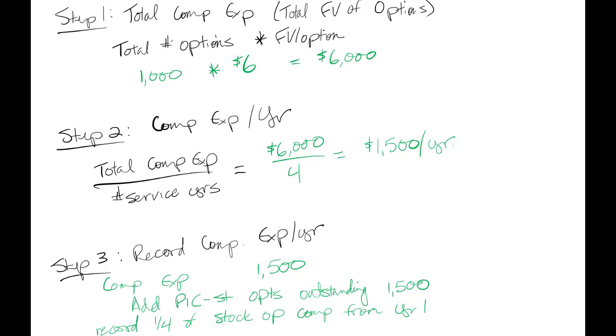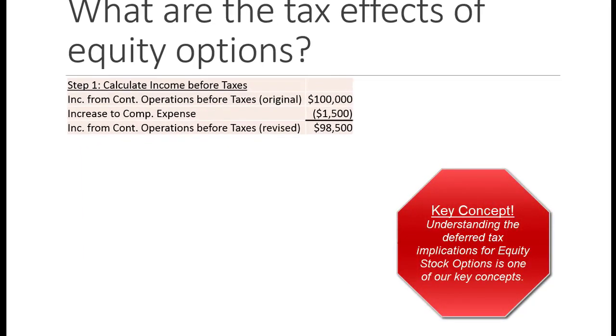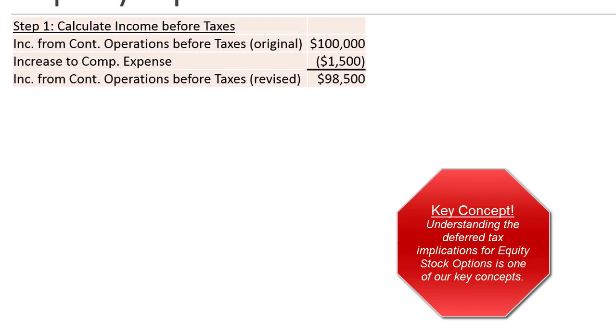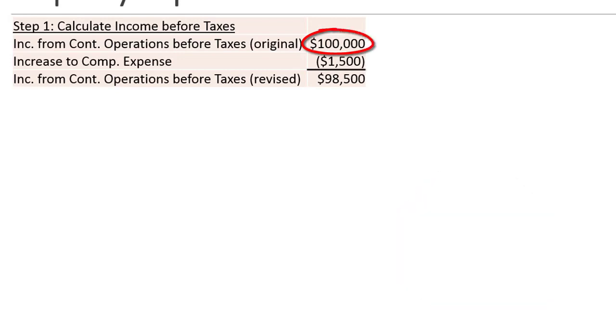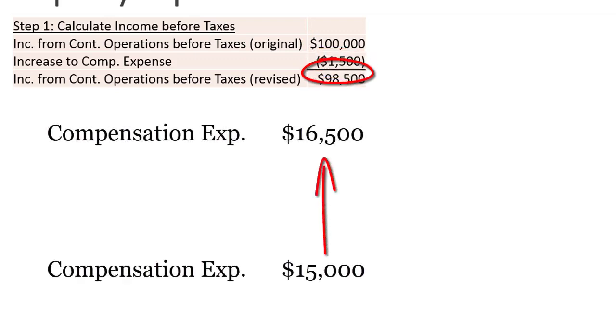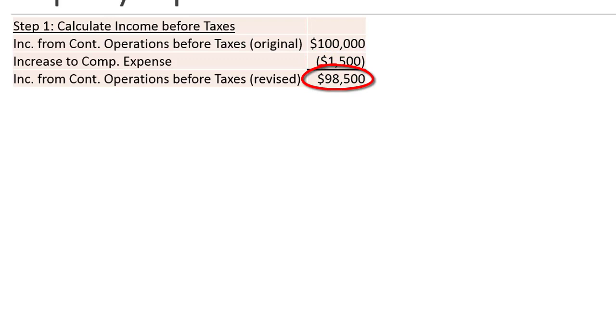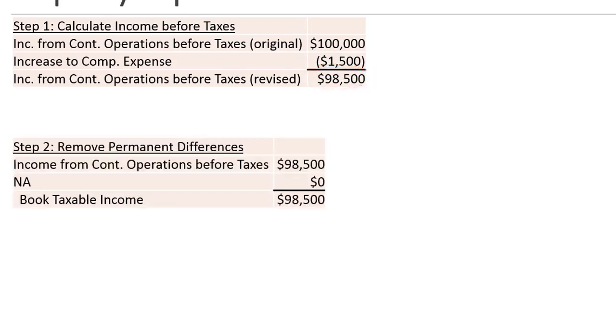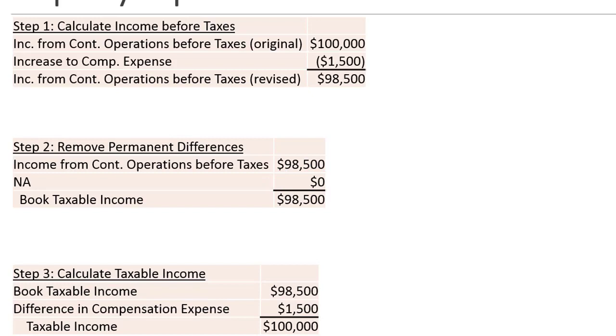So let's take a look at how this would fall out in our deferred tax calculations. First off, we'd start by calculating income before taxes. So before we granted the options, let's just say that our income from continuing operations before taxes was $100,000. We increase compensation expense, that's that debit, $1,500. We increase the expense, which drops our income from continuing operations. So we're now down to $98,500. Step two would be removing permanent differences. We're just going to ignore that for this example. Then we get to step three, and the number's already in here, but we're going to draw our graph since it's so important.